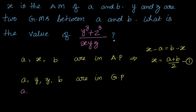We will write the terms as a, ar, ar², ar³. That means y equals ar, z equals ar², and b equals ar³.